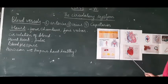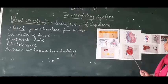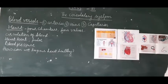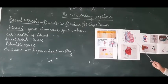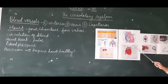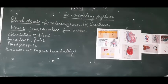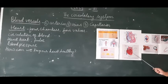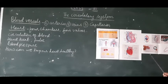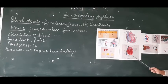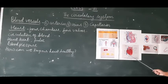The heart pumps blood to different parts of the body and is enclosed by a protective sac called the pericardium. The heart has four chambers: the upper two chambers are called auricles (also called atria), and the lower chambers are called ventricles — right auricle, left auricle, right ventricle, and left ventricle.